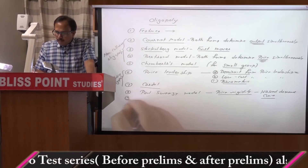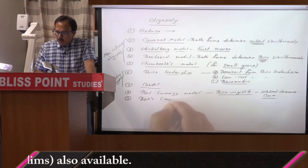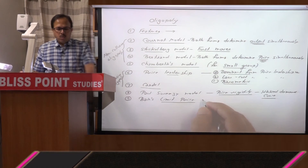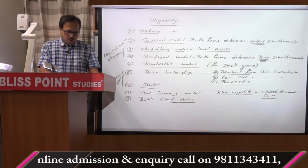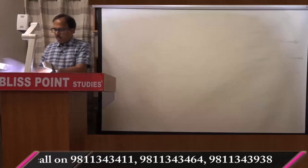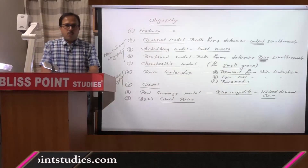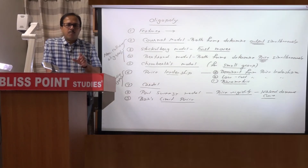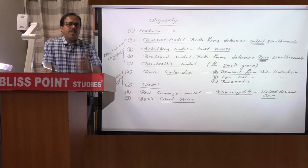The ninth topic in oligopoly is Bain's limit price theory. This was asked in 2016 in the compulsory section — question number 17 simply asked: state Bain's limit price theory. You must know what exactly the limit price is, how Bain has defined it, and what its significance is. It is basically an example of entry-preventing pricing — how existing firms in oligopoly can prevent the entry of new firms by setting a limit price.